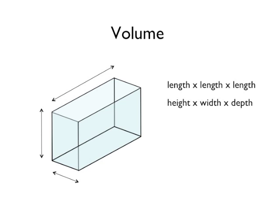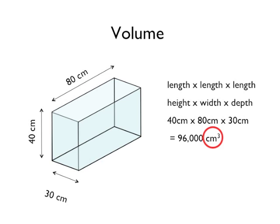For example, an aquarium might have dimensions of 40 centimeters by 80 centimeters by 30 centimeters. When these are multiplied together, you get a volume of 96,000 centimeters cubed. The centimeters cubed says you have centimeters times centimeters times centimeters, so you know this is a volume.